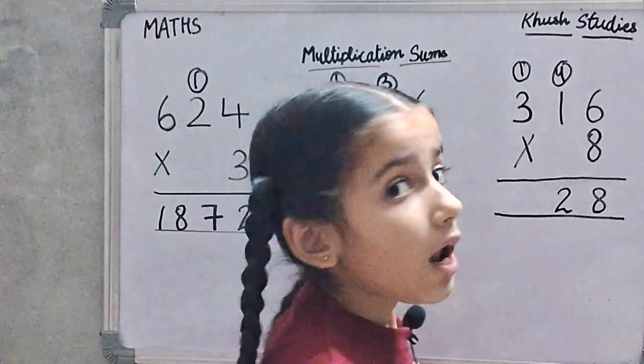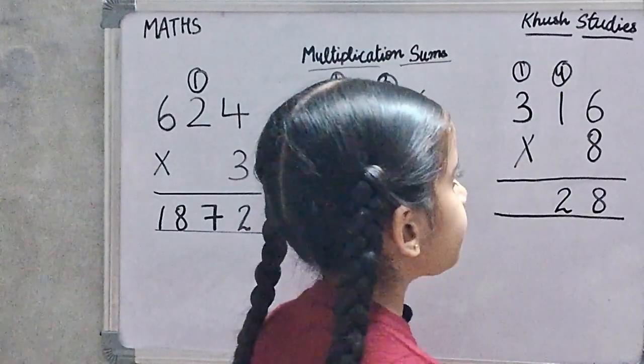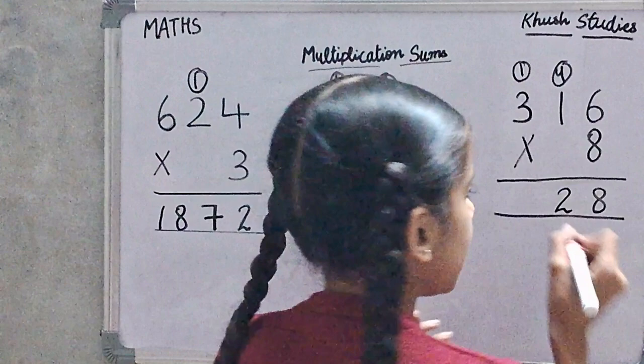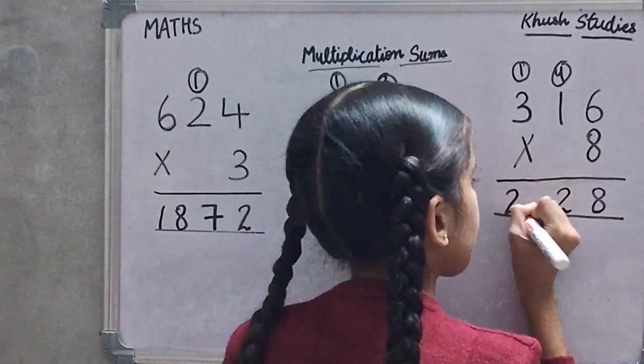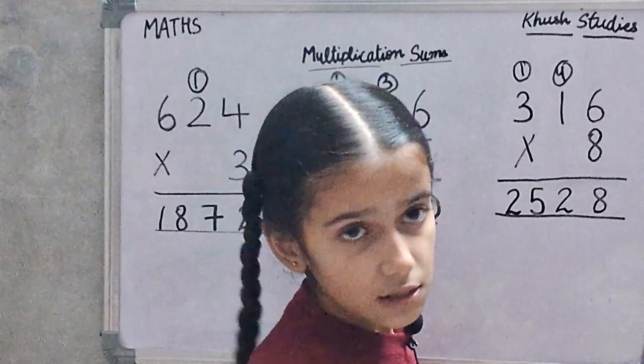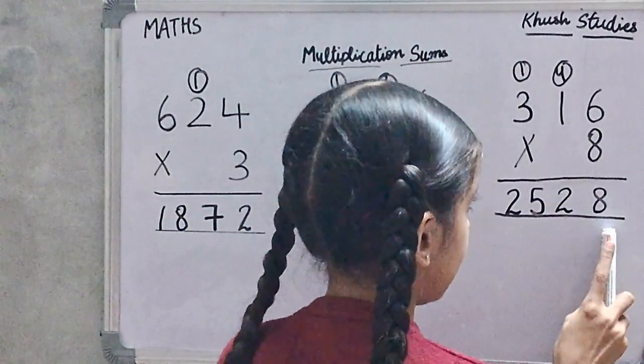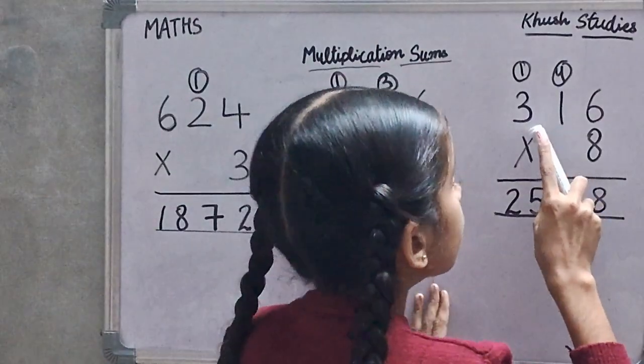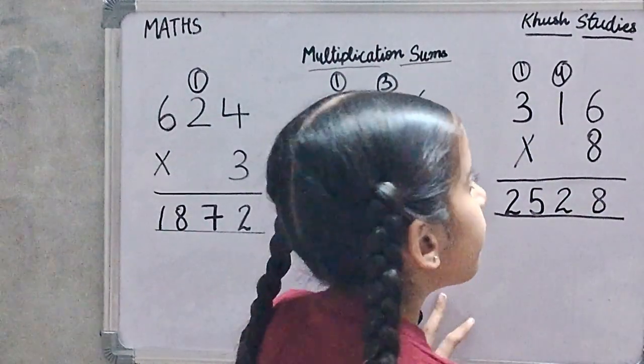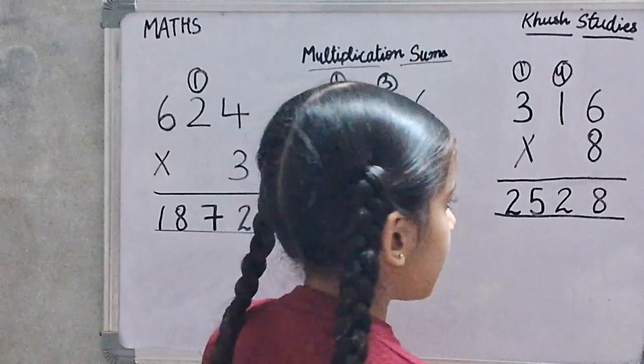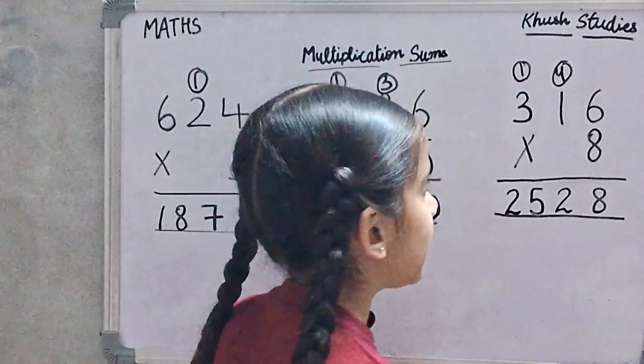8 times 3 is 24. 24 plus 1 is 25. So 316 multiply by 8 is 2528.